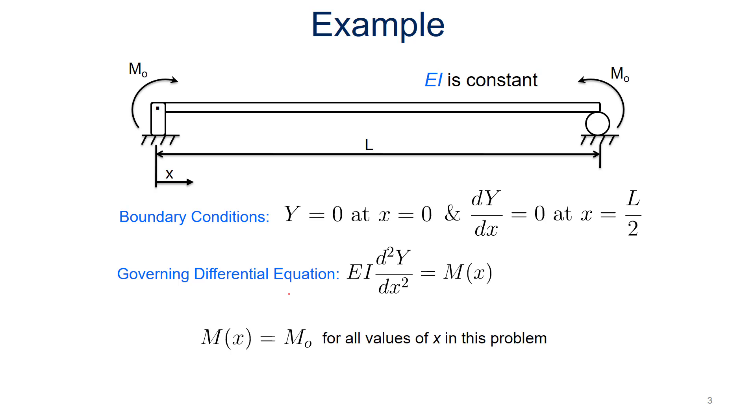Just to remind ourselves about the example we're working through here, we've got a beam in bending with some boundary conditions. It's not moving at x equals zero, and y is at a zero slope at the middle of our beam. We have a governing differential equation.